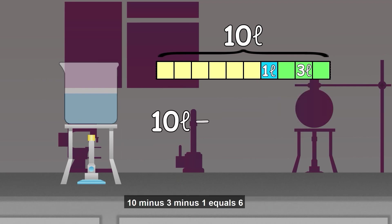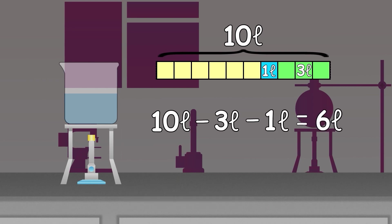10 minus 3 minus 1 equals 6. 6 liters of water is left now.